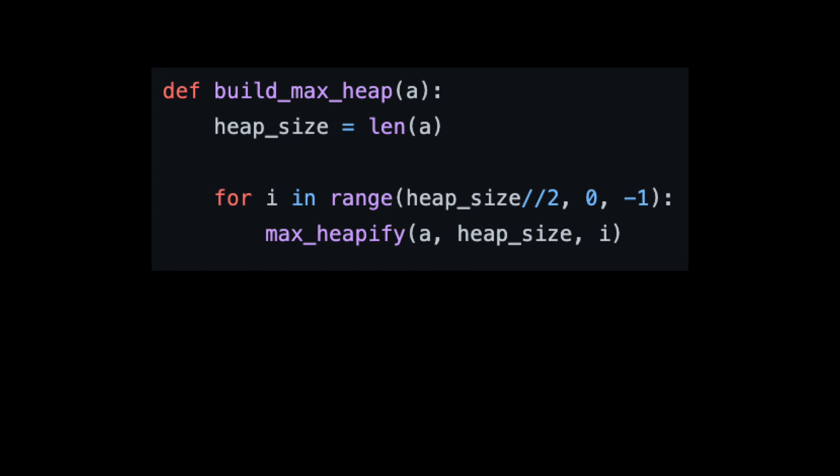Looking at the code, you can see because of our for loop, we have a linear runtime, or big O of N.